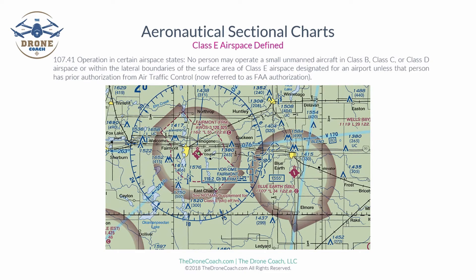Here we have a Class E airport — an airport inside Class E controlled airspace that runs from the surface all the way up to the next overlying airspace, which is likely Class A airspace. So this Class E airspace runs from the surface up to 17,999 feet. It is nestled inside Class E airspace that begins at 700 feet AGL on the inside and 1,200 feet AGL on the outside.